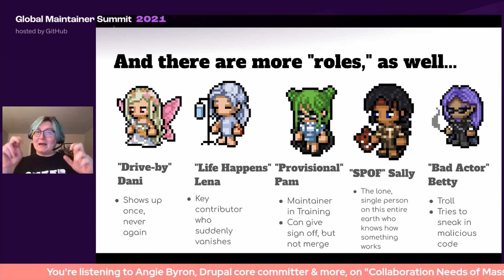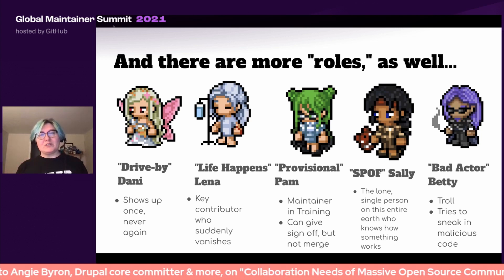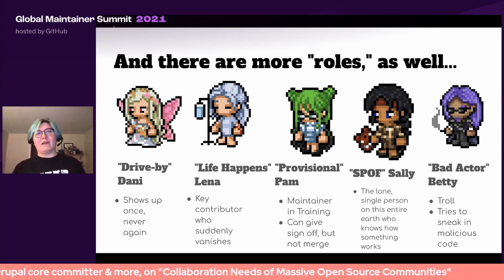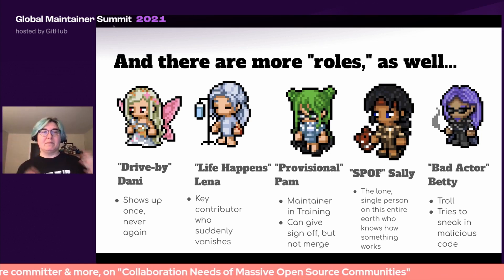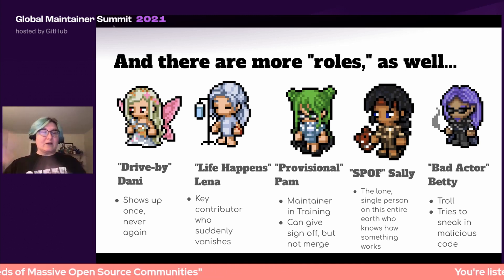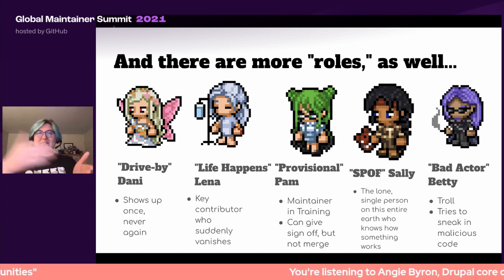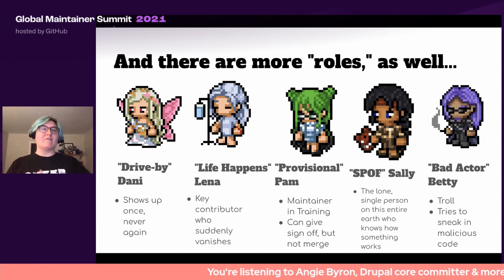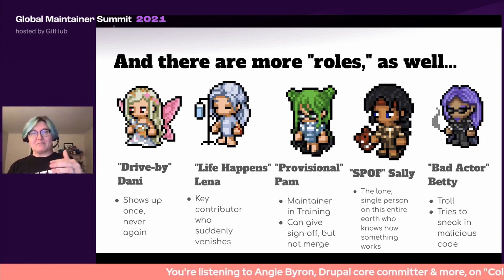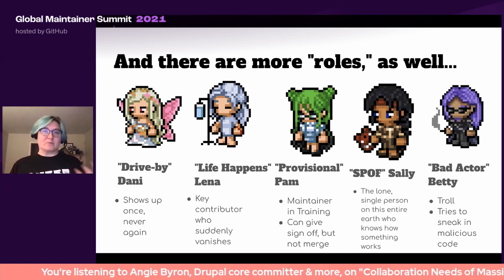There's Life Happens Lena — a key contributor to your project who suddenly, for whatever reason, vanishes. Might be a medical issue, might be a mental health break, might be having a child. Whatever it is, they're gone. And unlike an enterprise organization where you'd just assign another person to the role because you're obviously hiring a backfill, that is not the reality in open source projects. You kind of have to scrawl around.